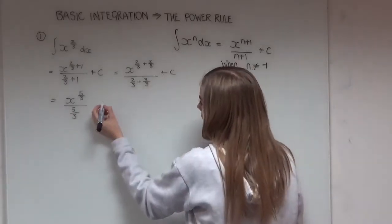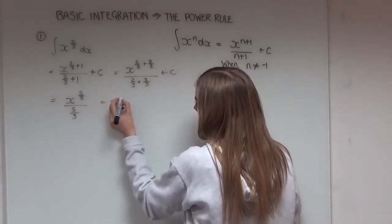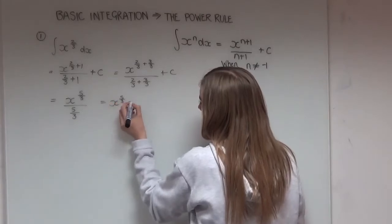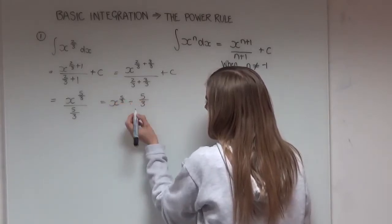So I can rewrite this as x to the power of 5 over 3 divided by 5 over 3 like that.